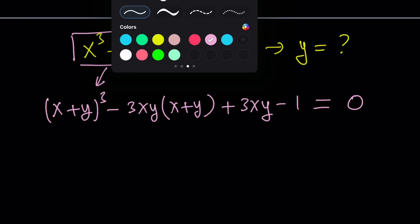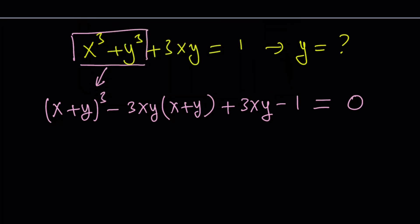By grouping, it makes sense if we put these two together because they both have 3xy in them. So we can make a common factor. The rest is just a cube minus 1.